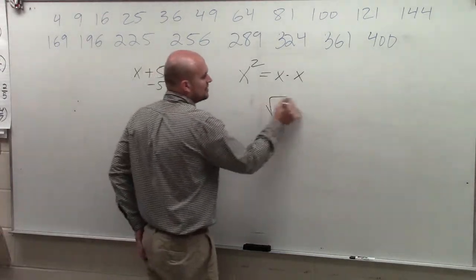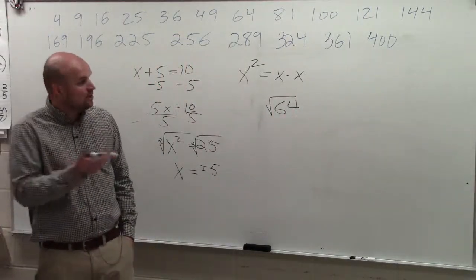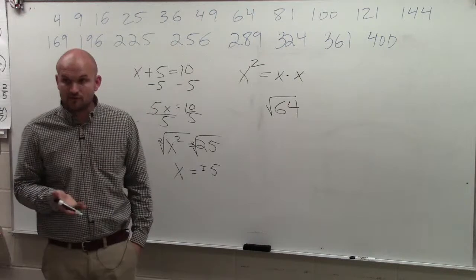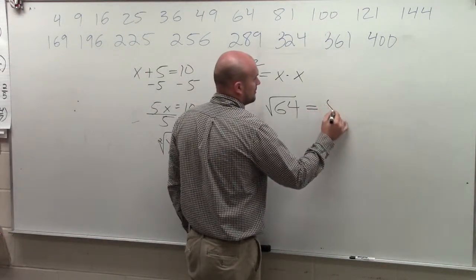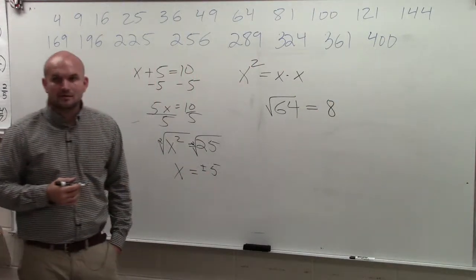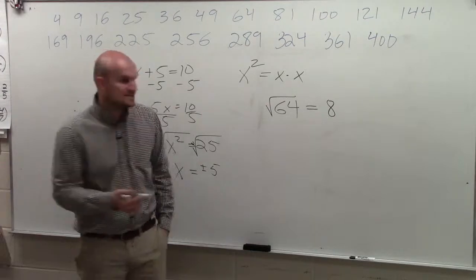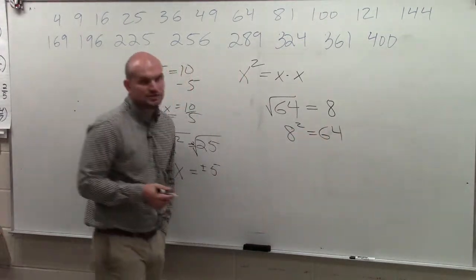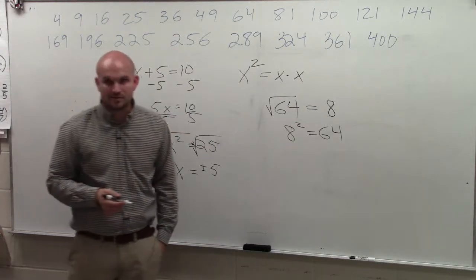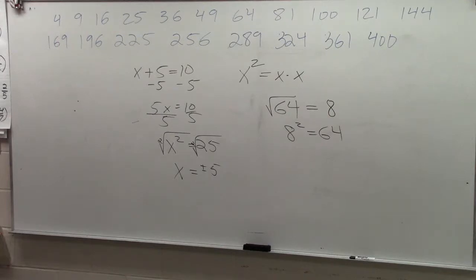So when we're looking at a number, basically when we're looking at the square root, we want to say what number multiplies by itself to give us 64. And in this case, you could say 8, all right? So in this case, the square root of 64 is 8, because 8 squared equals 64. Do you guys understand the relationships of square root and square? Yes? So basically, if you have square root of 64, 64.